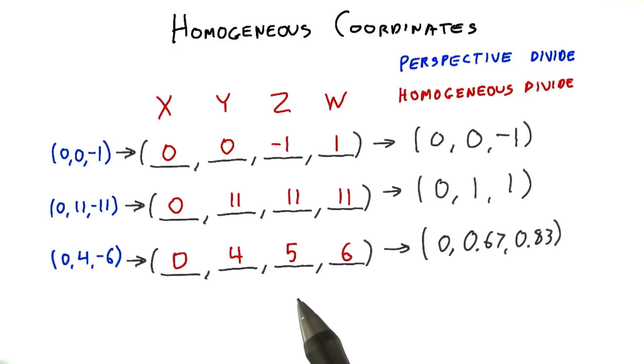Our last point is a little more interesting. Dividing through by w gives us 0, 0.67, 0.83.